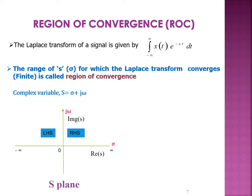Let us study what is called the region of convergence before looking into the Laplace transform of one-sided and two-sided signals. The formula for Laplace transform is the integral from minus infinity to infinity of x of t times e power minus st dt. The range of s — that is, the particular value of sigma for which the Laplace transform converges — is going to be called the region of convergence. Since s is a complex variable given by sigma plus j omega, we represent this on the s-plane, where the horizontal axis is the real part of s and the vertical axis is the imaginary part of s.